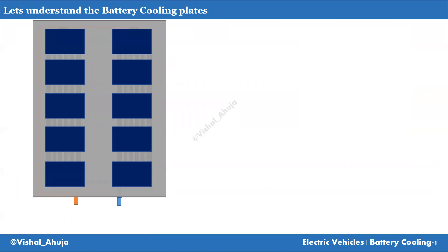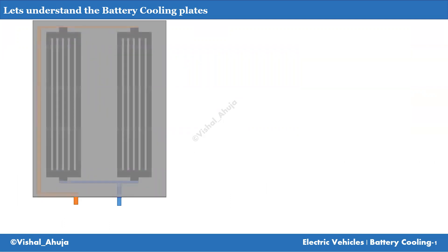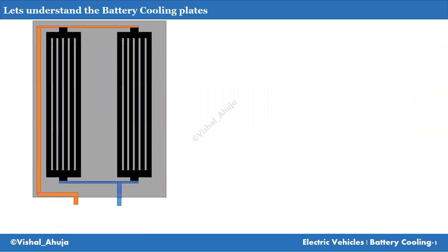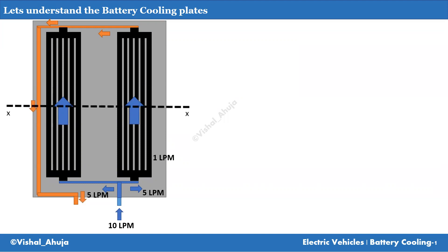Let's understand battery cooling plates and their flow mechanism. There is a battery module, and if you see from the top, below it is a battery cooling plate with flow channels. For this case, let's consider simple geometries: 10 LPM is flowing into the system, dividing into 5 LPM on either side. Each single battery cooling plate is further divided into 5 channels, so each channel has 1 LPM of flow. The fluid is heated up by the cells and the hot fluid comes out of the system.